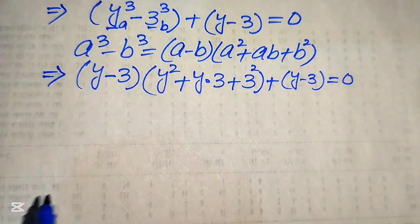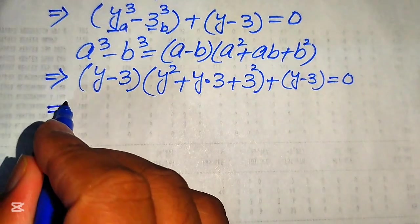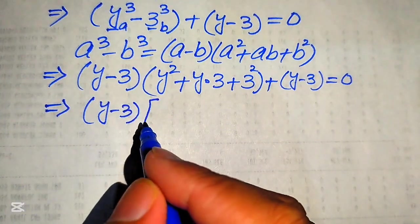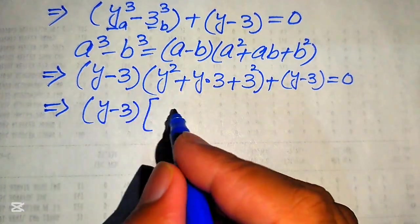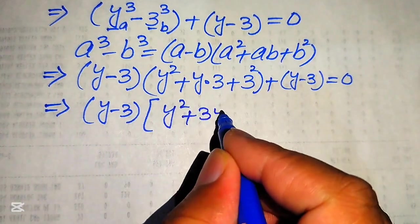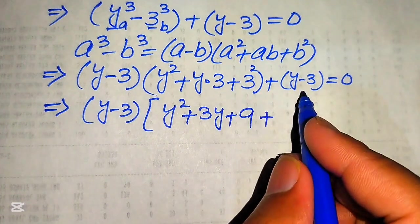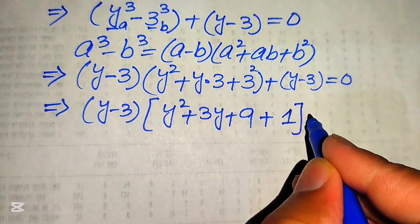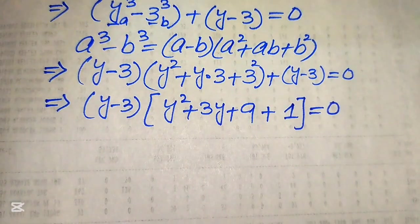Both terms contain (y − 3), so we factor it out as a common factor. Taking (y − 3) common leaves y² + 3y + 9 from the first term and +1 from the second term, giving (y − 3)(y² + 3y + 9 + 1) = 0.